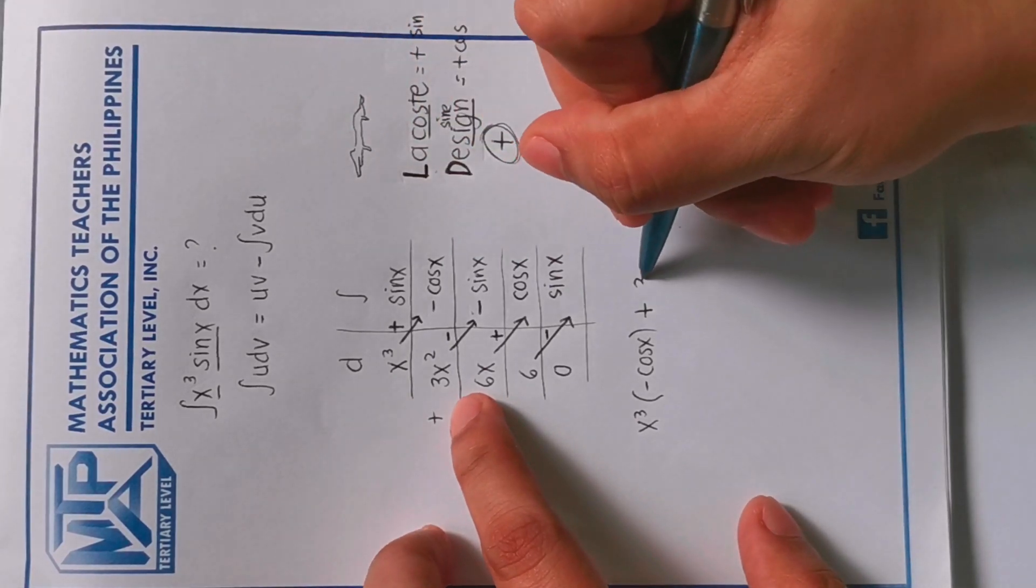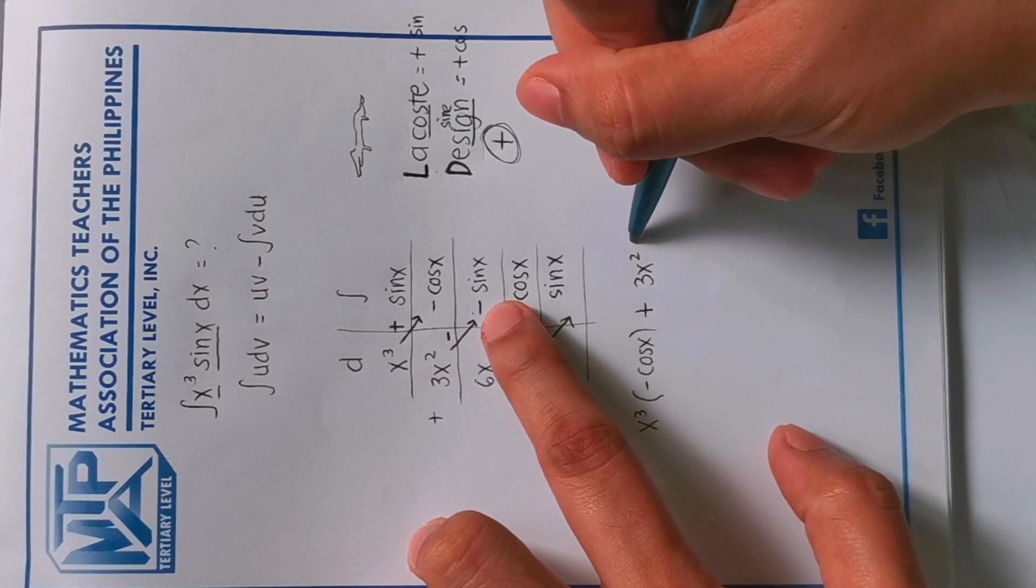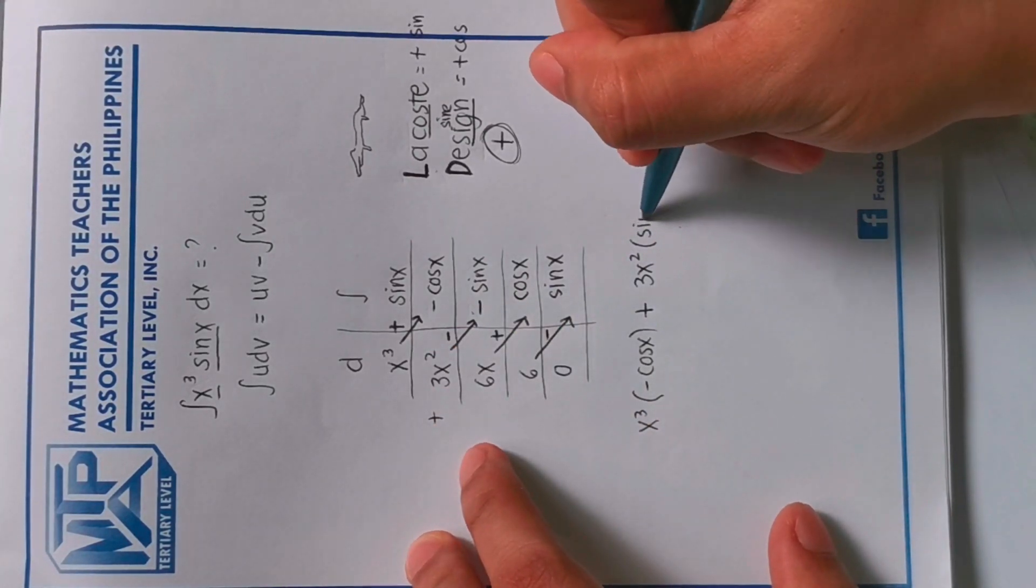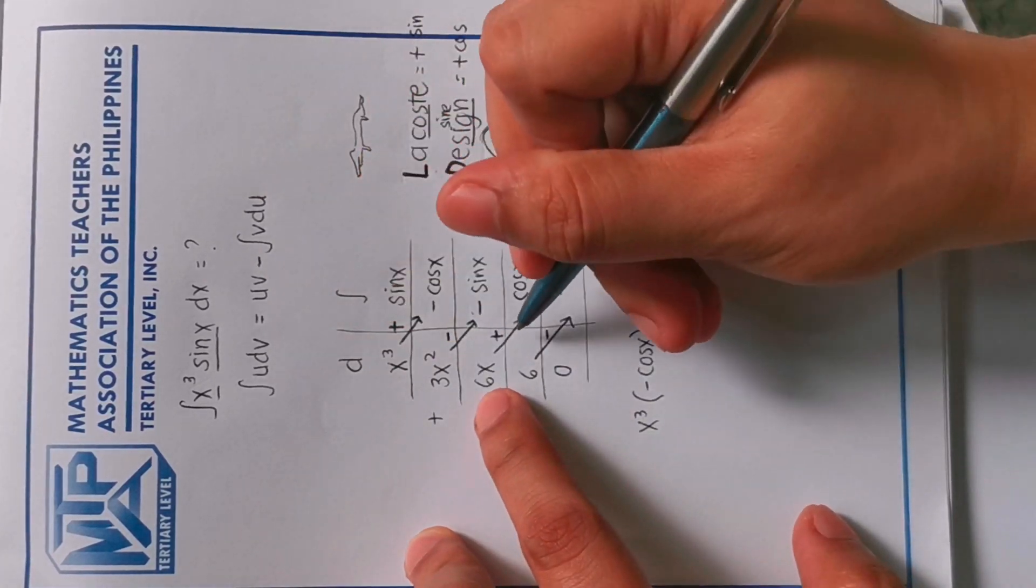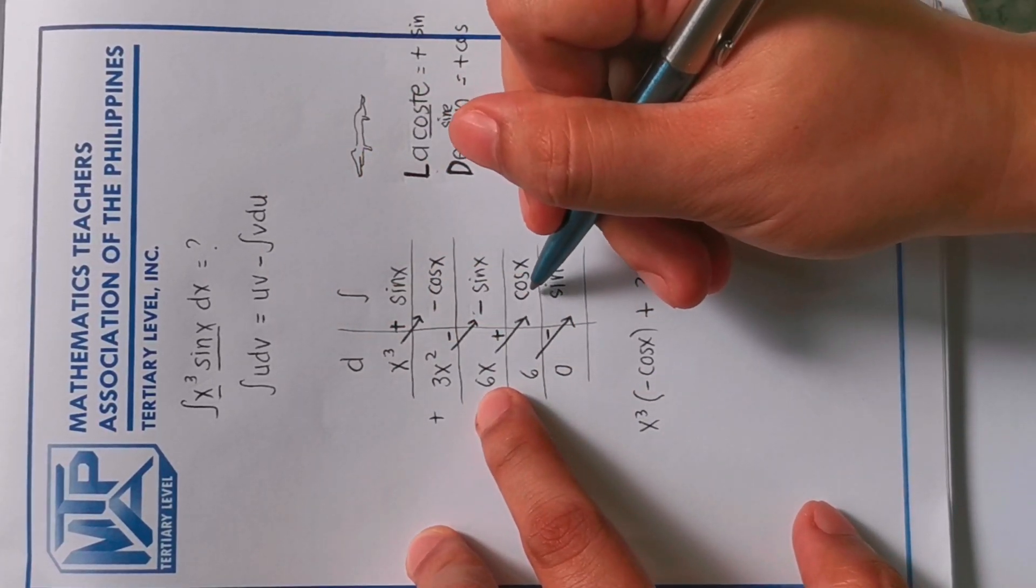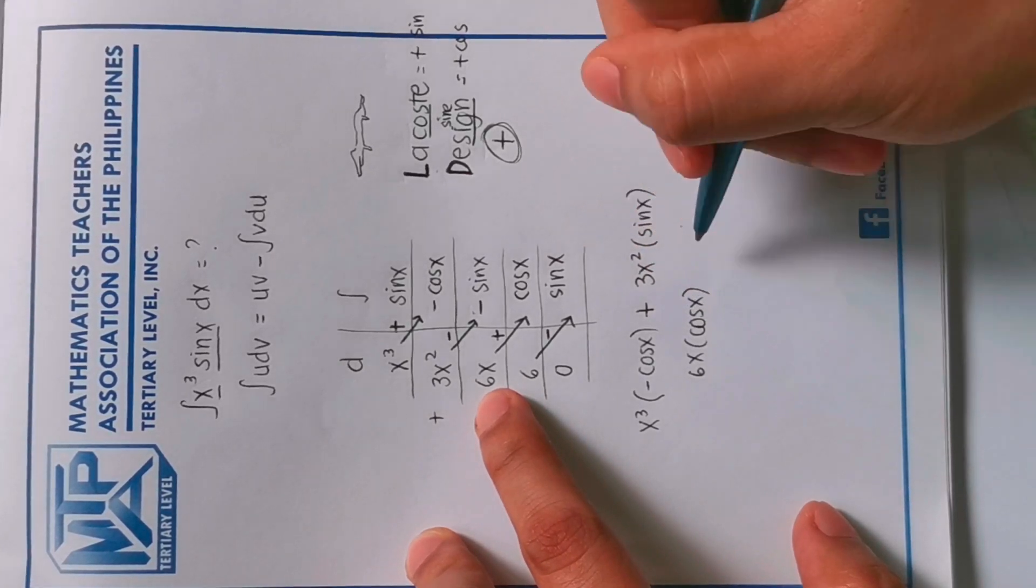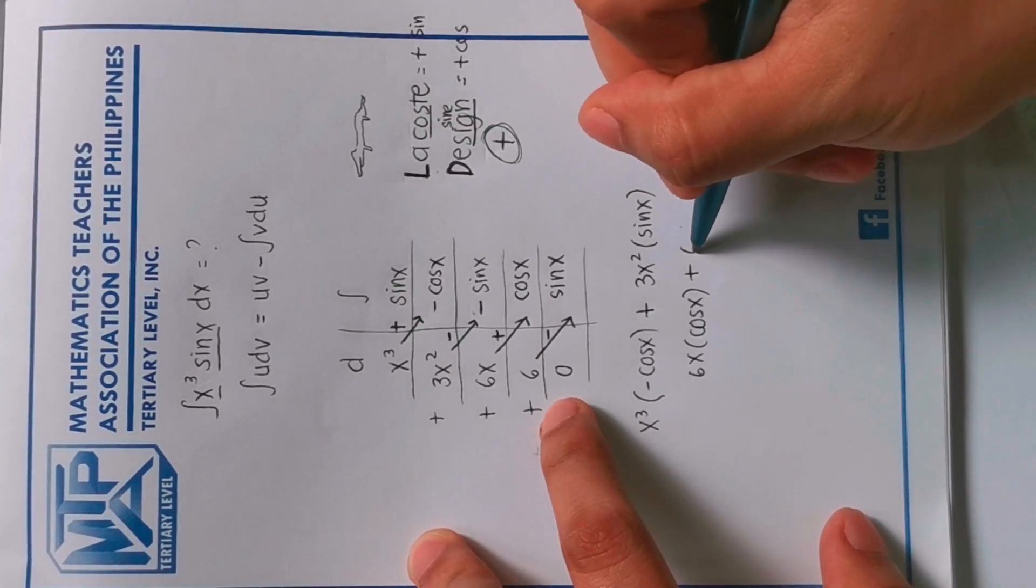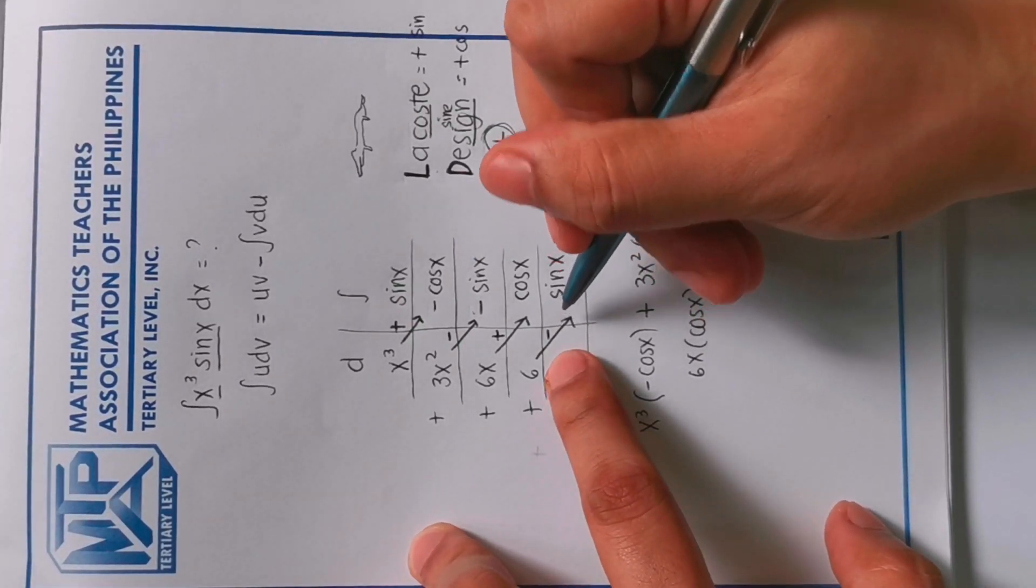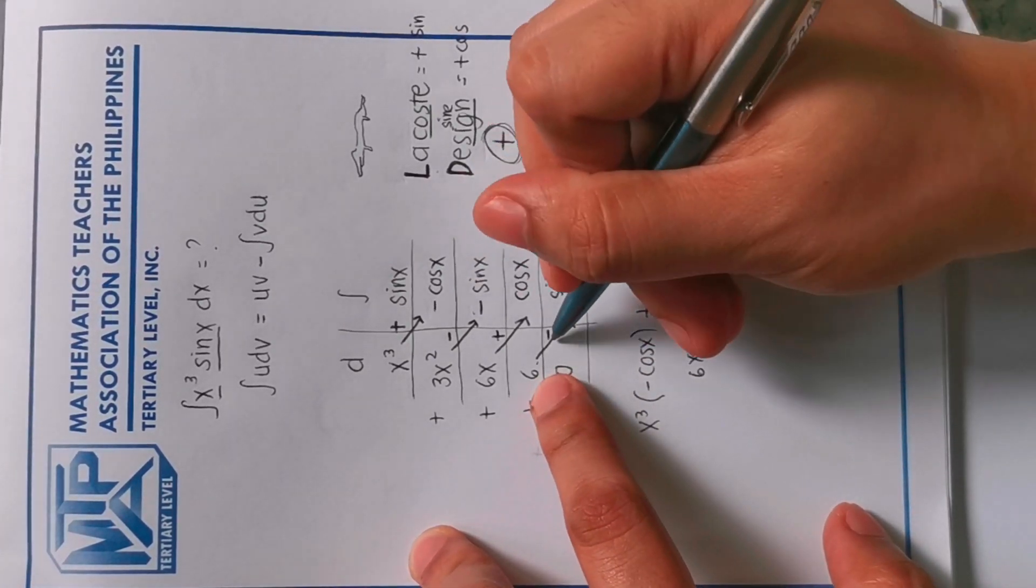Then plus 6x times cosine x. Then plus, plus 6 times negative sine x, so 6 times sine x negative.